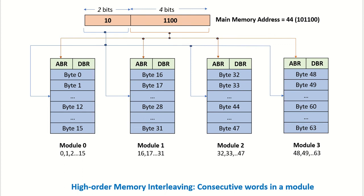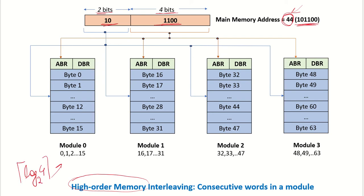Let's say the processor sends out main memory address 44. This is represented by 6 bits; in binary, 44 is 101100. For high order memory interleaving, the high order bits give the module number. Since there are 4 modules, 2 bits are required to specify the module number. So the high order 2 bits specify the module and the low order bits specify the particular address within that module.